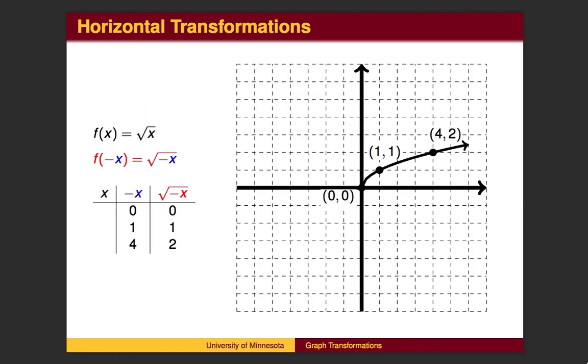To illustrate the reflection, we will use a different function, the square root function. When working backward to find the x values, the x values change sign, thereby making the graph point to the left rather than to the right.